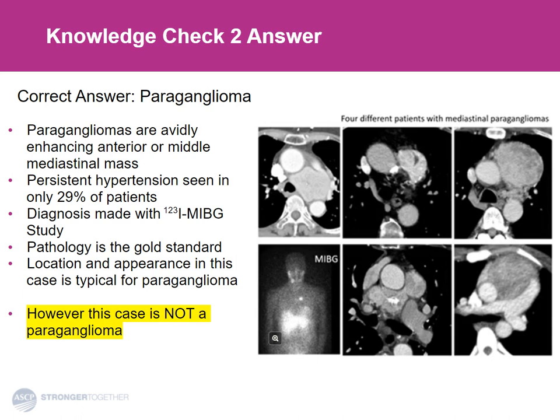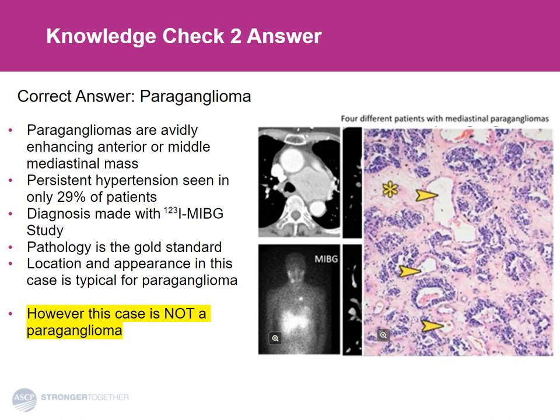However, this was not a paraganglioma. Looking at the pathology, I can see what appear to be nests of glands and some vascular channels, but I'm not entirely sure — that's what pathologists do. One thing I forgot to mention is that paragangliomas will have uptake on FDG PET imaging as well, so that also would fit with the diagnosis.